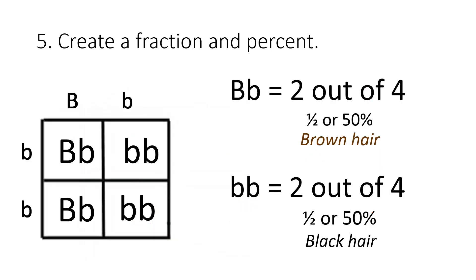My next step is to create a fraction and a percent. So two out of the four, two out of four, have brown hair, and two out of four have black hair. So you have a 50% chance of having brown hair and a 50% chance of having black hair if you were born to these two parents.